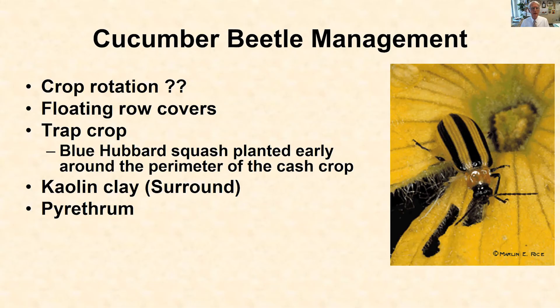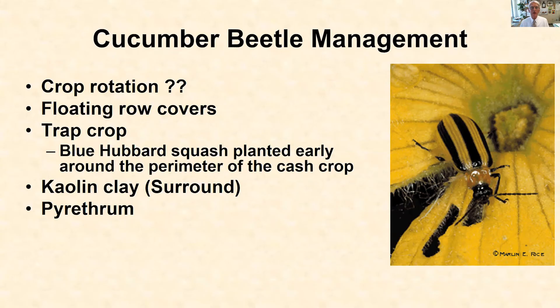A trap crop is another possibility — using a highly attractive crop around the outside of the main planting. In theory, it attracts all the beetles to that highly attractive plant where they can be sprayed and killed without spraying the main crop. Organically, kaolin clay and pyrethrum will both kill beetles in the short run, with kaolin clay acting more as a repellent. In traditional production, there's a long list of insecticides that can be used. There's also the option of systemic insecticides watered into the soil on transplants, which the plant takes up and kills beetles as they feed.